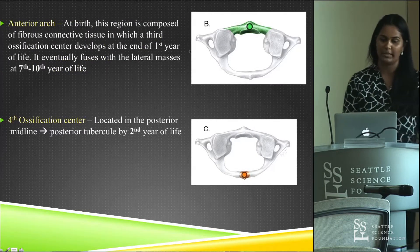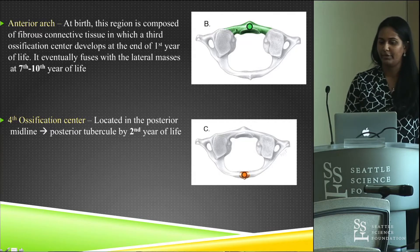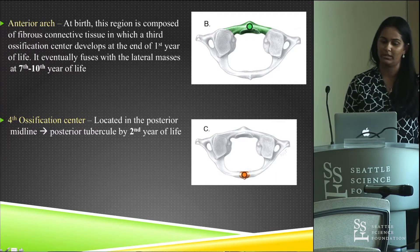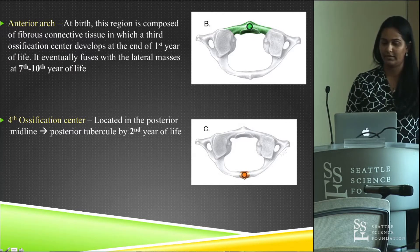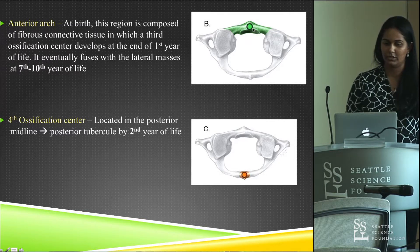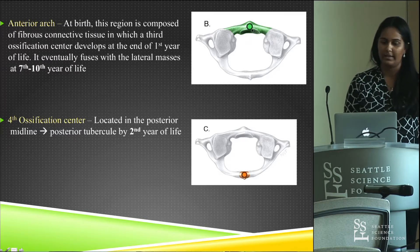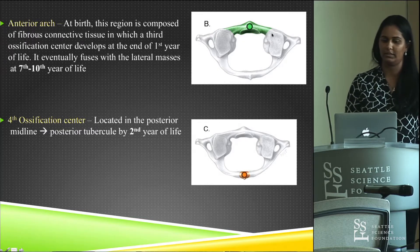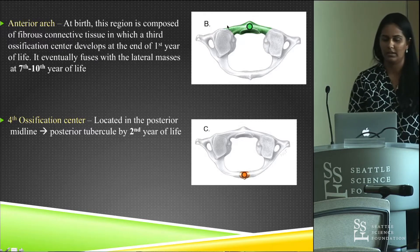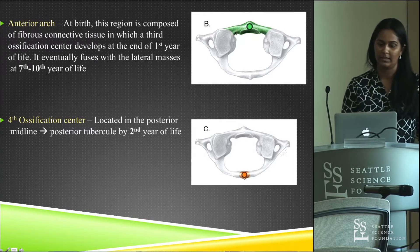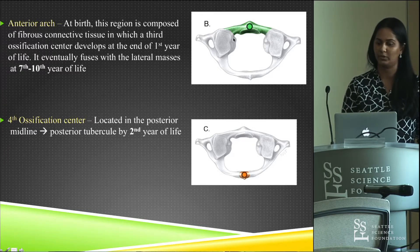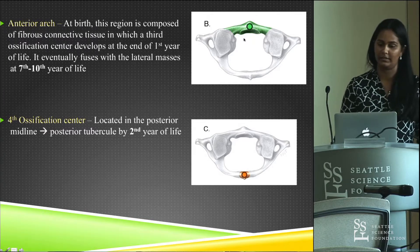The anterior arch at birth is made up of fibrocartilage. Around the end of your first year of life, an ossification center develops on the anterior aspect and grows laterally towards the lateral masses, with expected fusion between seven to ten years of age. Failure to form this ossification center, or failure to fuse with the lateral masses, could result in a cleft in the anterior arch.